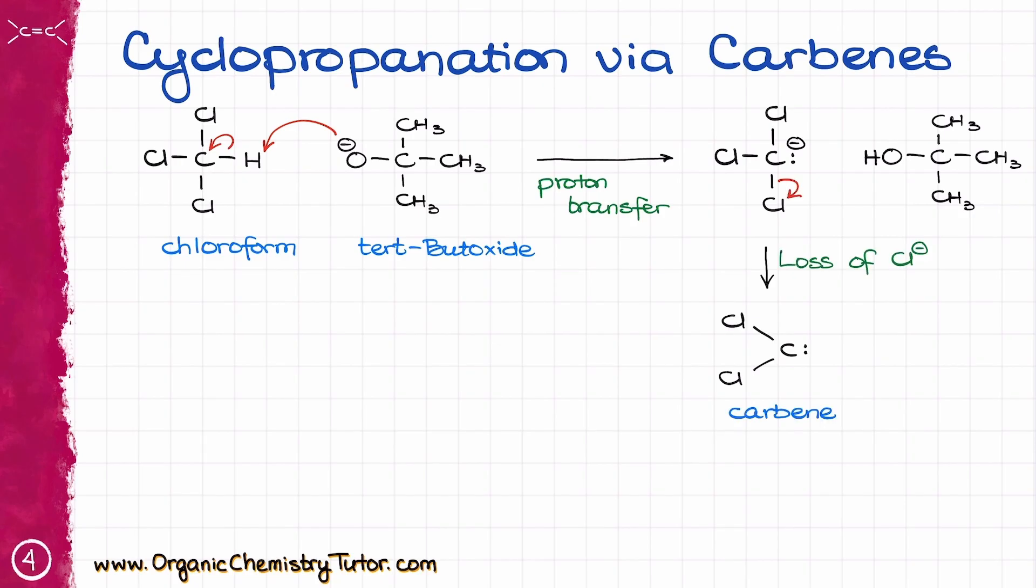Well, now, carbene is a rather exotic species. It is a neutral six-electron carbon species that is at the same time a nucleophile because it has an electron pair sitting on it, and it is also an electrophile because of the empty p orbital that it has. Truly jack-of-all-trades, chemically speaking.